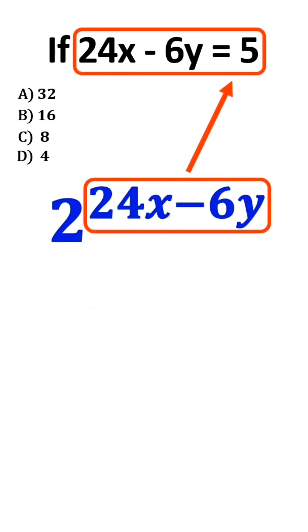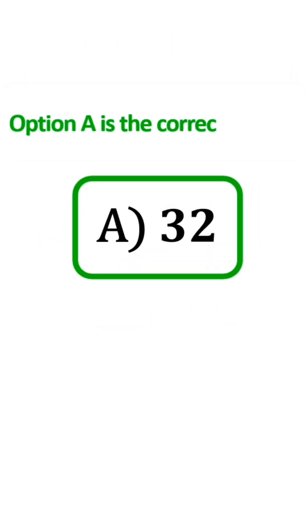Wow! Look at this! 24x minus 6y equals 5. So, this expression becomes 2 to the 5 which equals 32. Awesome! That's it! Option A is the correct answer.